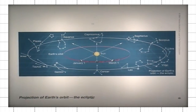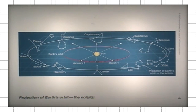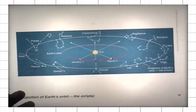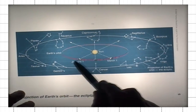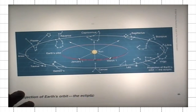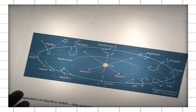It looks to us as if, in addition to this daily motion of the stars — which is much quicker, 15 degrees per hour — there is another motion that we start seeing over the period of a few weeks, which is related to the motion of the Earth around the Sun. As a result of this motion, the stars and the constellations move across the sky, but at a much slower rate, at roughly one degree per day.